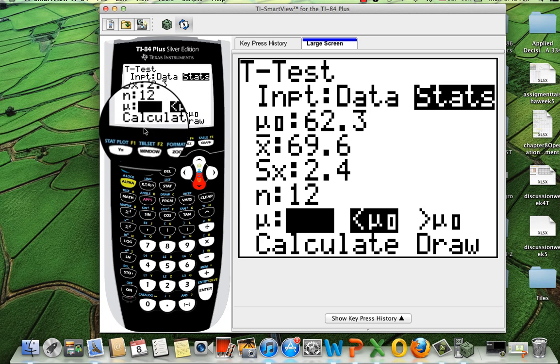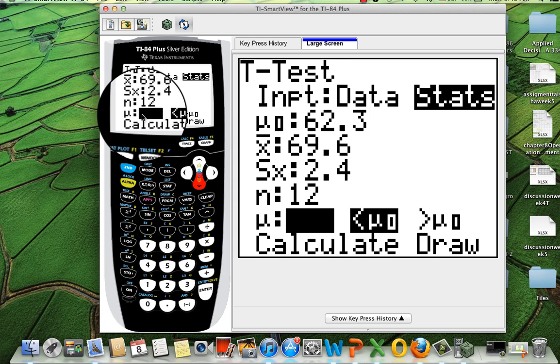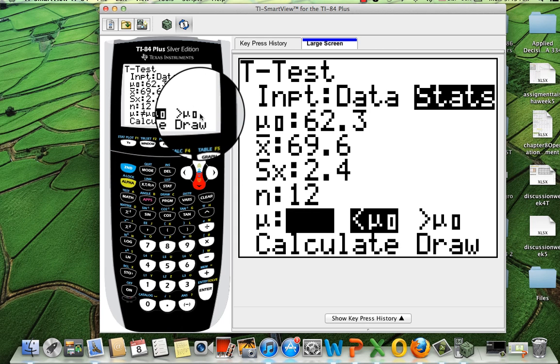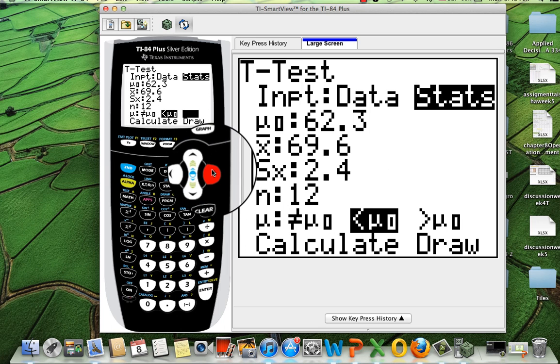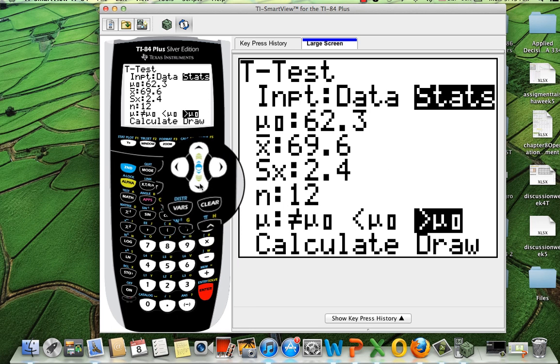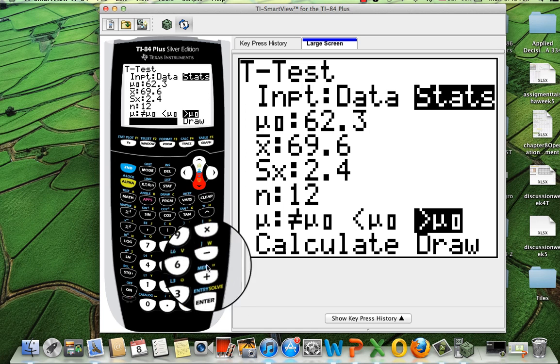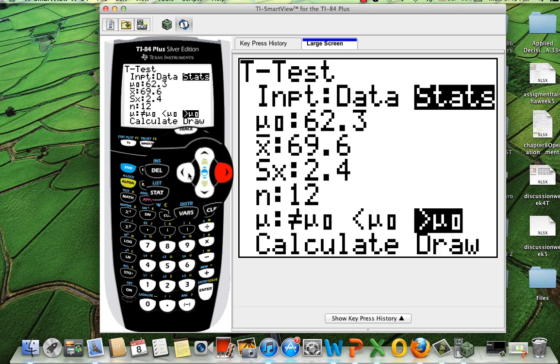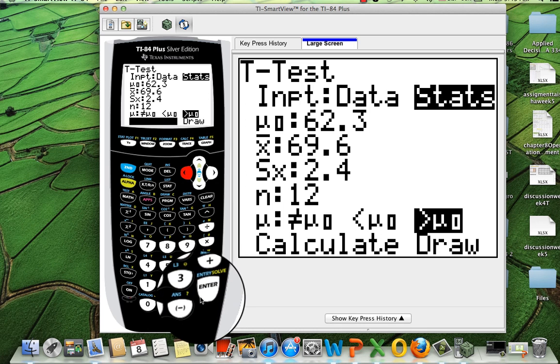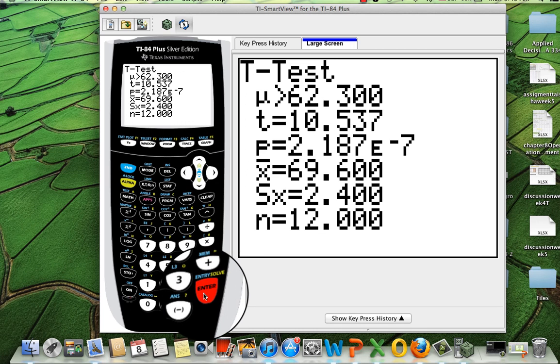So now, in this section here, you're gonna have not equals to, less than, and greater than. Remember, we're doing a right tail, so it's gonna be greater than. So I click enter. And finally, I do calculate. By the way, if you do draw, it's gonna give you also the little bell. We're gonna go back. So let's go ahead and do enter. And voila.